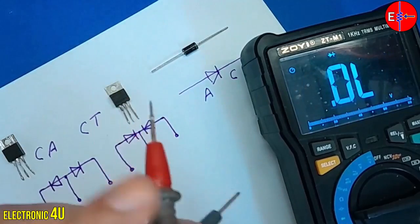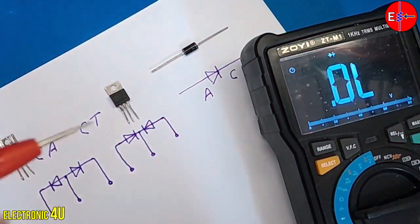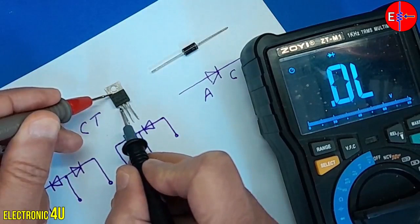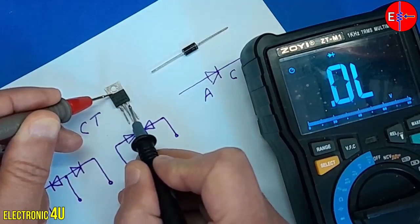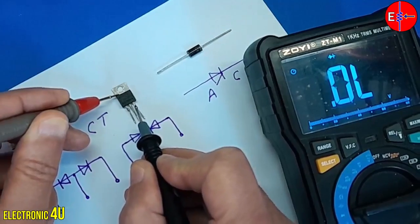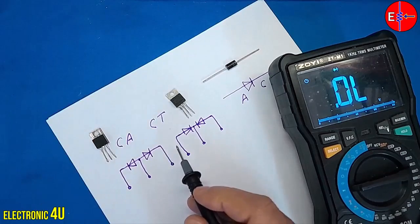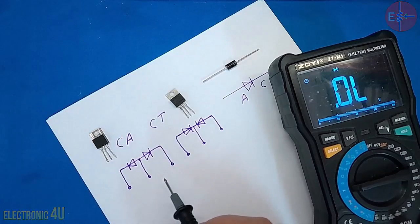Now I reverse the probes. No number can be seen. Again, no number can be seen. So we learn how to test this model of diodes. Thank you for watching the video.